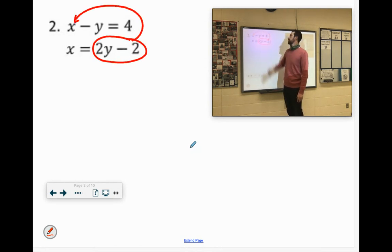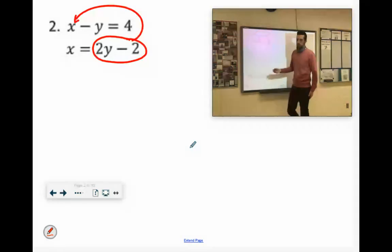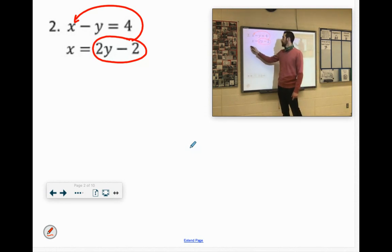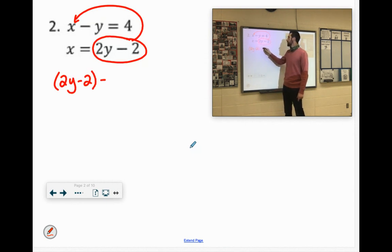We're going to sub in 2y minus 2 for x in the first equation. So it'll say 2y minus 2 minus y equals 4. Again, all we did was change that x out.